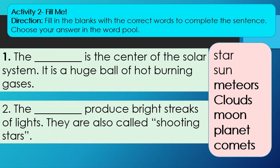Number 2: The blank produce bright streaks of lights. They are also called shooting stars.